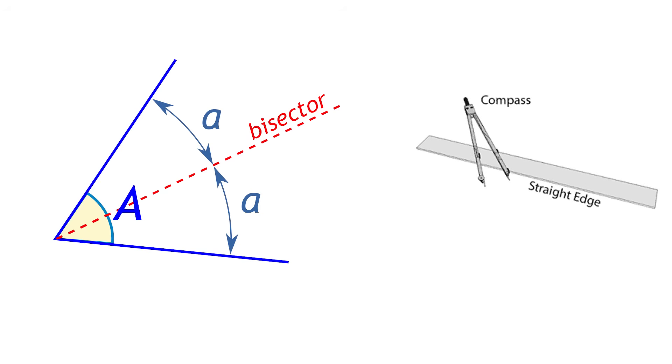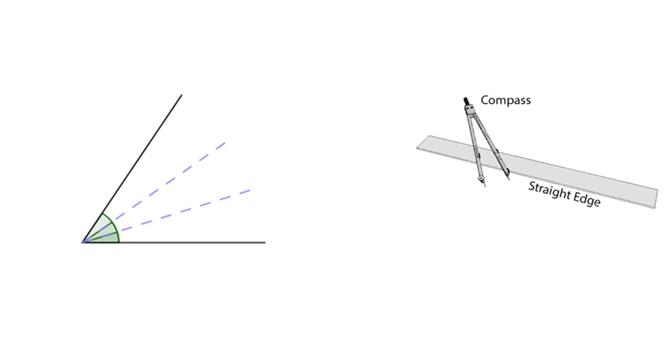However, the ancient Greeks could not figure out how to trisect or cut an angle into three equal parts. Despite many attempts over fifteen centuries, no one could find a way to do this using only a compass and a straight edge. It turns out that trisecting an angle is actually impossible to do with just those tools.